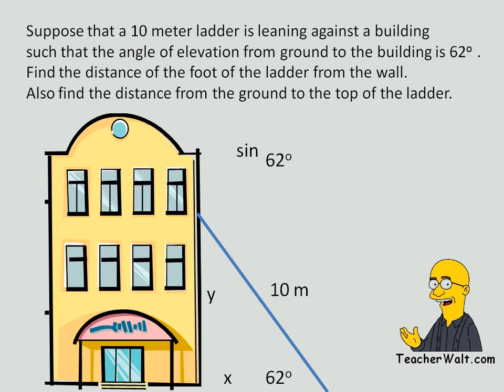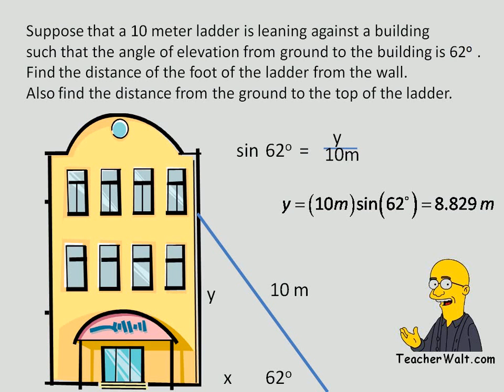In fact, what we're going to do is say the sine of 62 degrees is equal to the opposite side y over the hypotenuse, 10 meters. Now we have an equation that we can solve because this is an equation with numbers and one unknown. All we need to do is multiply both sides by 10 meters and use our calculator to find the sine of 62, and we find the answer to be 8.829 meters. So the distance from the ground to the ladder is 8.829 meters.